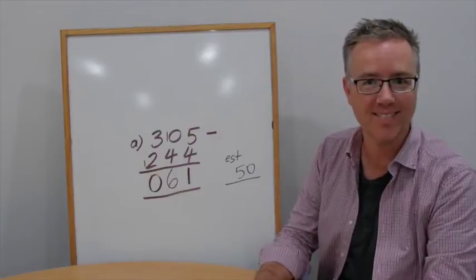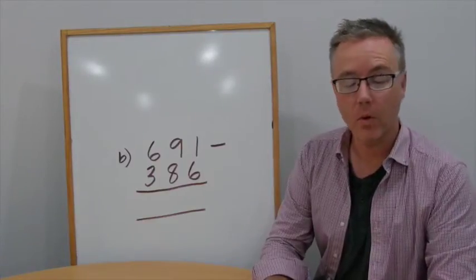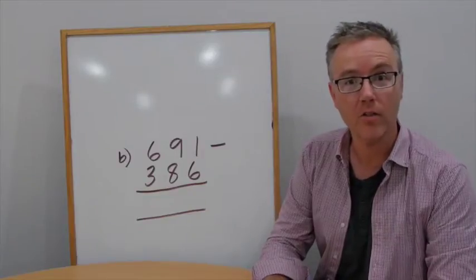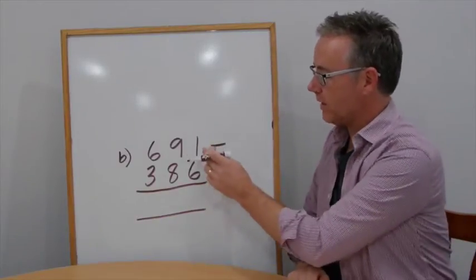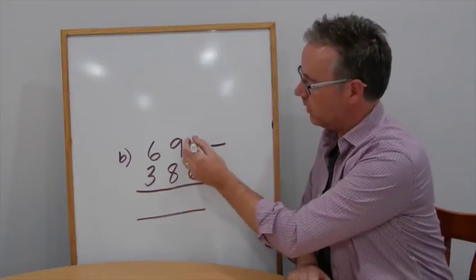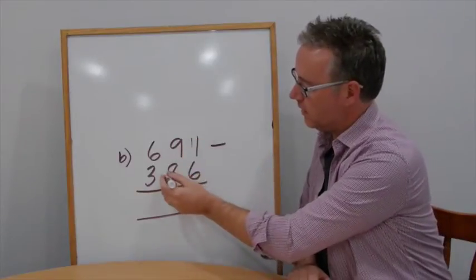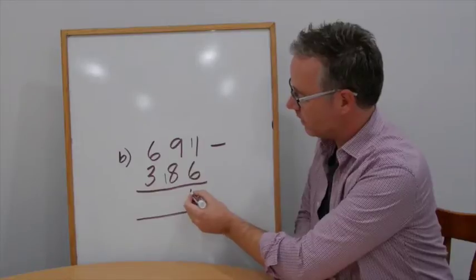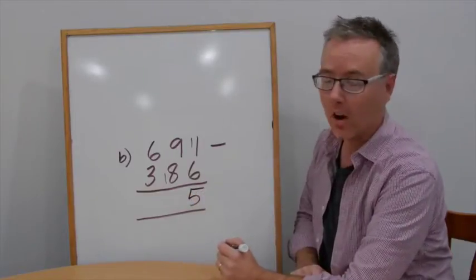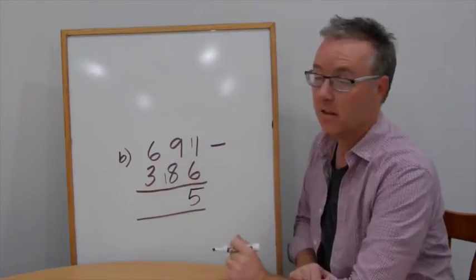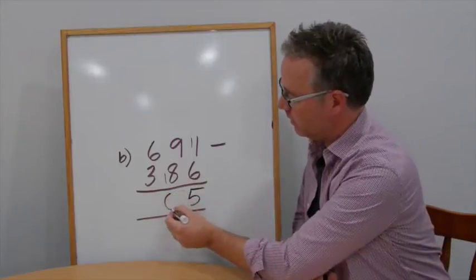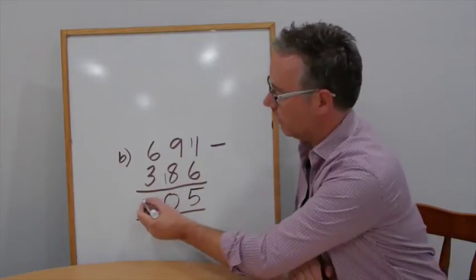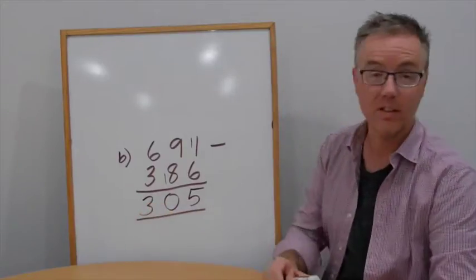Question B, we have 691 take away 386. 1 take away 6, I can't do. Add 10, add 10. 11 take away 6 is 5. 9 take away 9 is 0. And 6 take away 3 is 3.